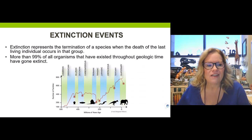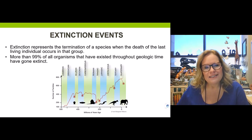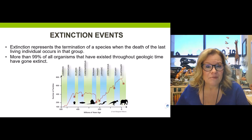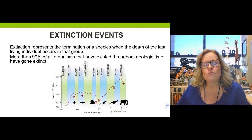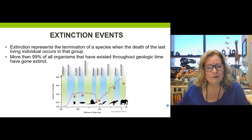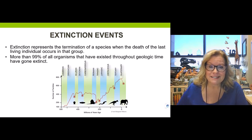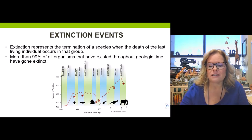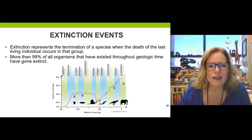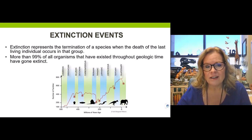So what is an extinction event? These represent the termination of a species — the last of the living organisms go belly up, meaning they go extinct and cannot reproduce. More than 99% of all living organisms that have existed throughout all of geologic time have gone extinct. That includes various species of humans. It's a bit sobering, but extinctions have affected basically all life forms on the planet throughout geologic time.